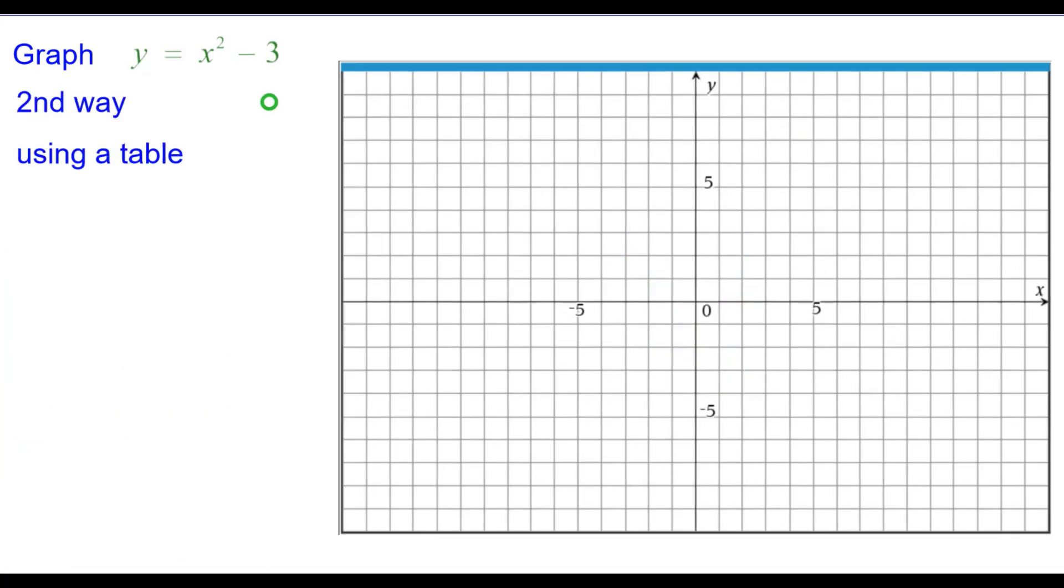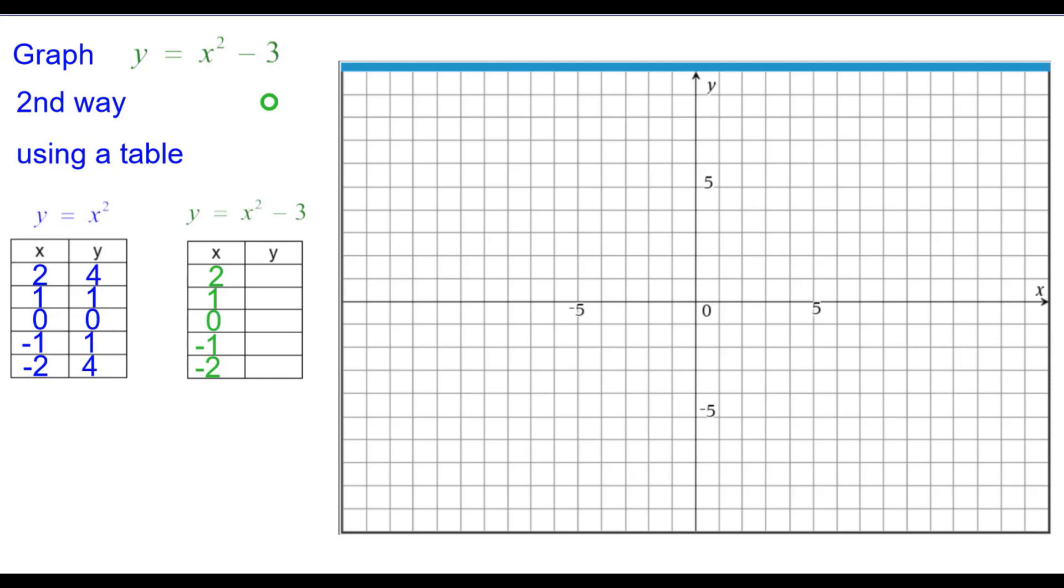The second way is using a table. So we're going to start off with the traditional y equals x squared table, those 5 points. And here's our table of x squared minus 3. We're going to subtract 3 from each of the y coordinates again because it's right there in the equation.